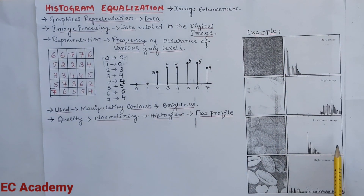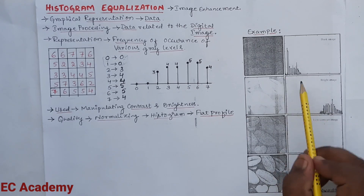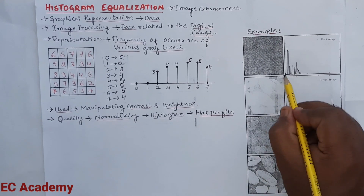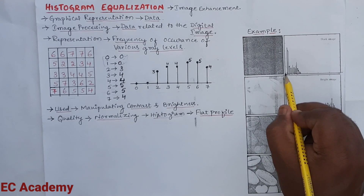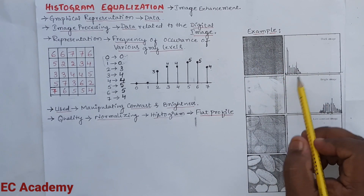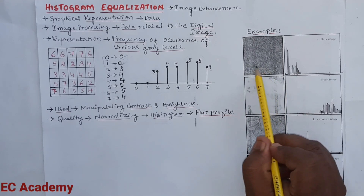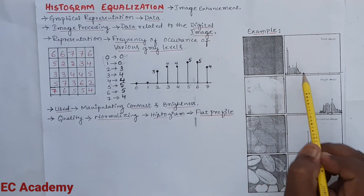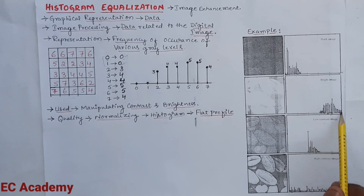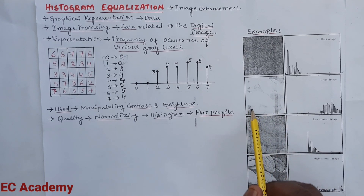We can consider different examples of histogram representation. If we consider a dark image, the histogram is placed at 0, grouped at black values, since the pixel value on the x-axis ranges from 0 (black) to 255 (white). A dark image has more black pixels. For a bright image, the histogram values are placed towards 255, indicating more white pixels compared to other gray level values.